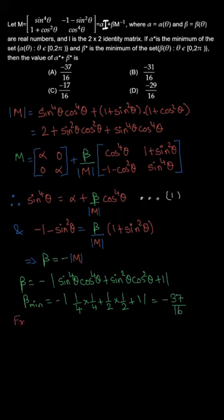Substituting theta = pi/4: sin(pi/4) = cos(pi/4) = 1/√2, so (1/√2)⁴ = 1/4 and (1/√2)² = 1/2. After simplification, the minimum value of beta comes out to be minus 37 by 16. So one part of the sum is clear.